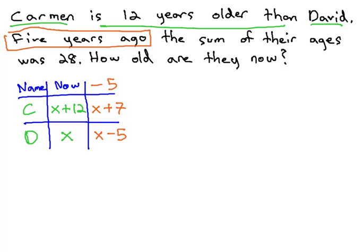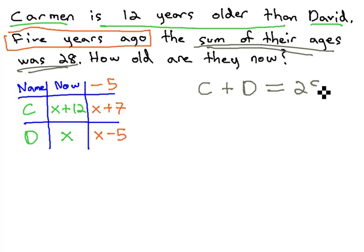Now that the table is complete, let's look at what happened 5 years ago. The sum of their ages was 28. To get the sum of their ages, sum means we're adding Carmen plus David. And it was, which is the past tense of is, or equals, 28.